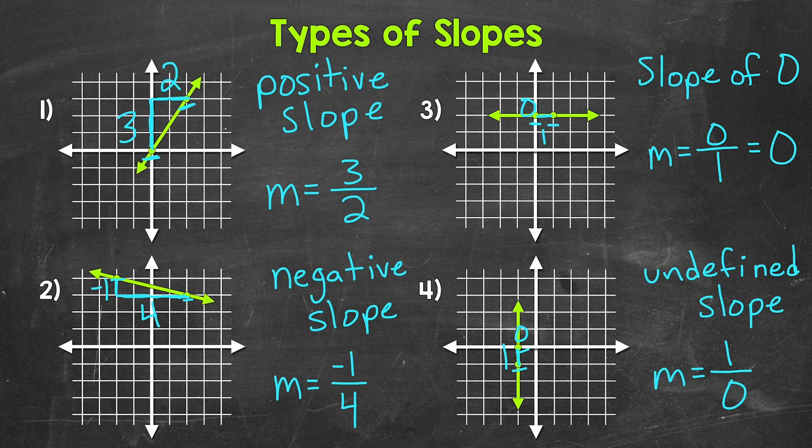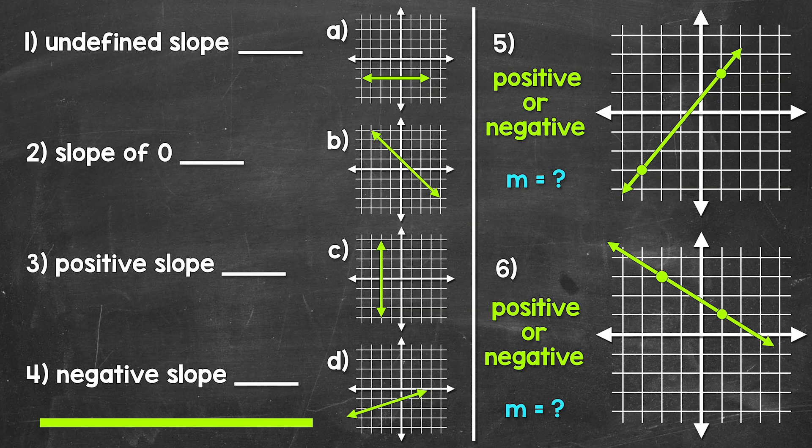Have paper and a pencil ready. Here are your practice problems. For numbers one through four, you have matching — match the type of slope to the correct line. For numbers five and six, tell whether it's a positive or negative slope, and then find the slope from the graph by counting units. Remember: rise over run. I'll give you two minutes and then we will go over the answers.